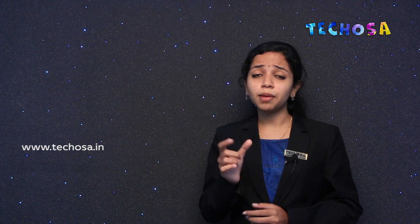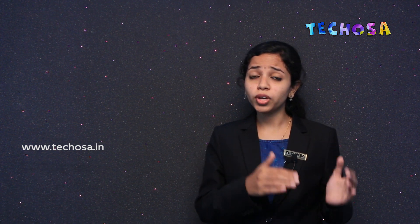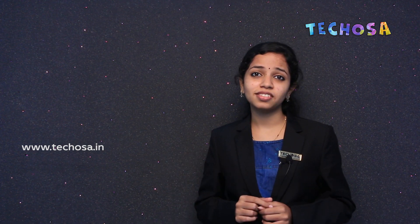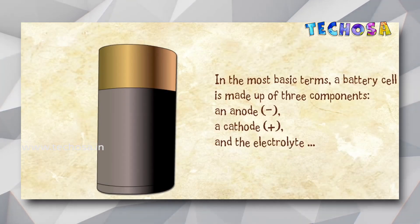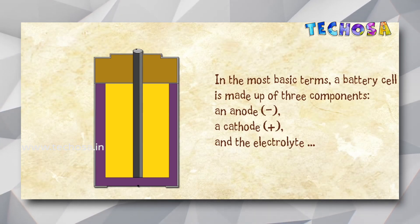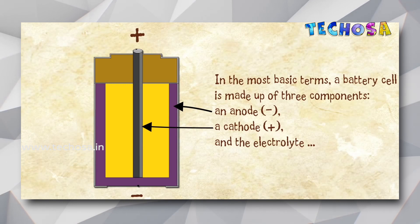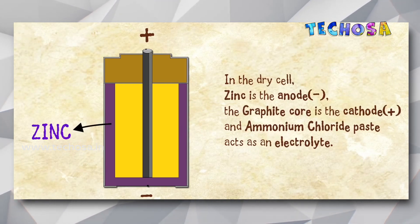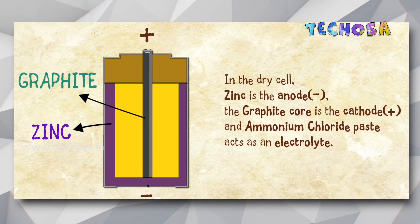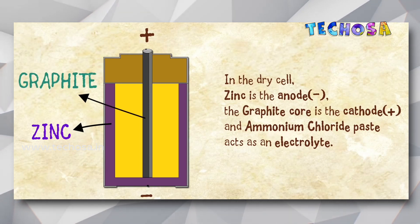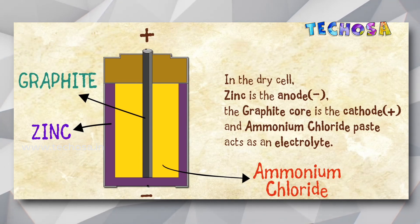Dry cells are available in various sizes, like the AA battery that we use in toy cars and the AAA battery that we use in TV remotes. Basically, a battery is made up of three components: an anode which is the negative part, a cathode which is the positive part, and an electrolyte. In a dry cell, zinc is the negative anode, graphite core is the positive cathode, and ammonium chloride paste is the electrolyte.